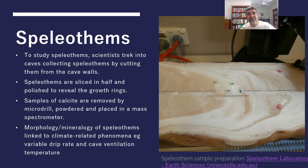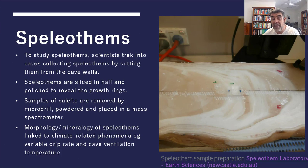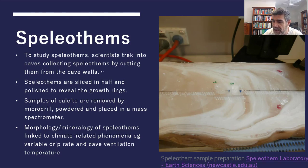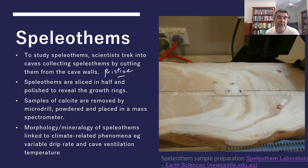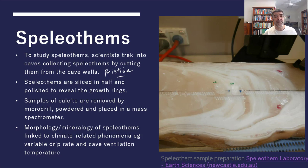Unfortunately, to study speleothems you have to destroy some of them — removing them from the cave by cutting. These samples should come from as-pristine caves as possible. Famous caves like Jenolan Caves or Wellington Caves can be contaminated by visitors; even foot traffic affects the formations, and oils from skin contact can cause changes in growth patterns. Scientists want the best, most pristine samples possible.